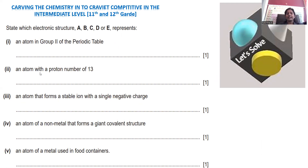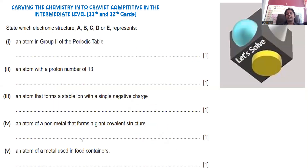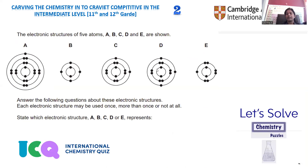Move on to question number two: an atom with the proton number of 13. Being all atoms are neutral in nature, the number of electrons equals the number of protons. If you count the number of electrons — 2 plus 8 is 10, 11, 12, 13 — 13 protons and 13 electrons. That is given for the metal aluminum, option number D. Aluminum has atomic number 13.